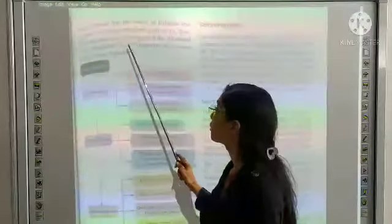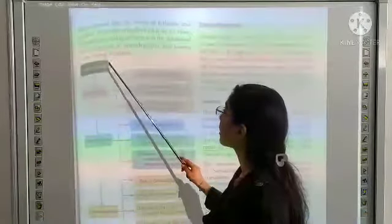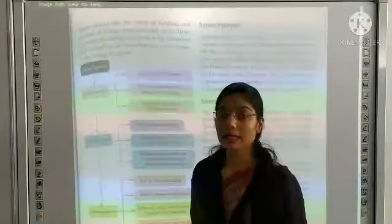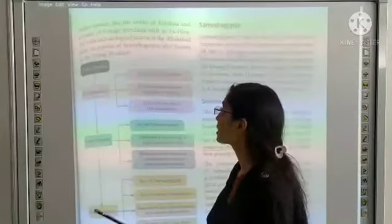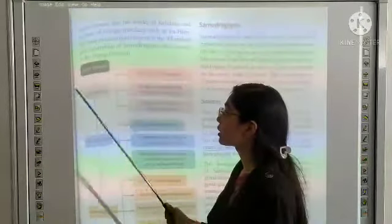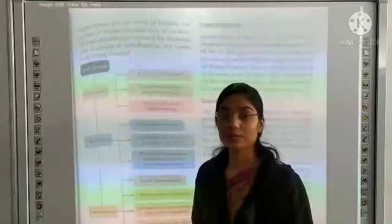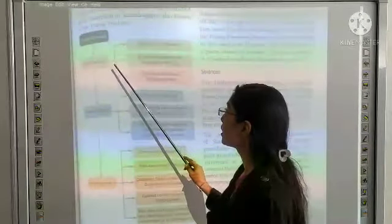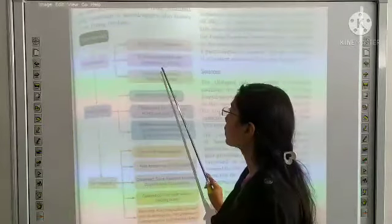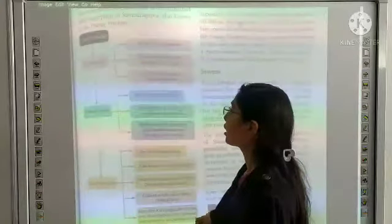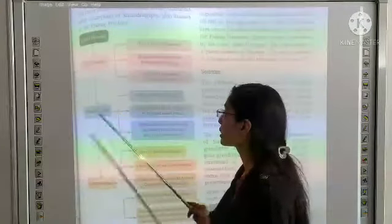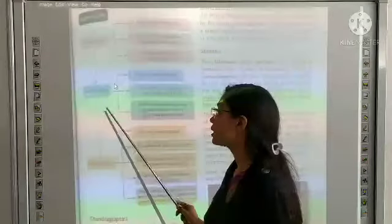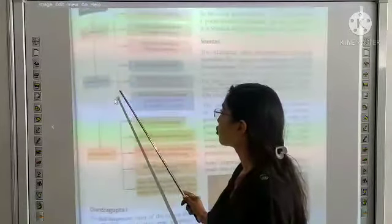The main archaeological source is Allahabad pillar inscription of Samudragupta, also known as Prayag Prashasti. Most information we have found about Samudragupta comes from this pillar inscription.